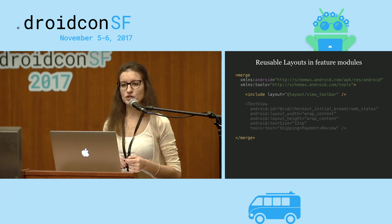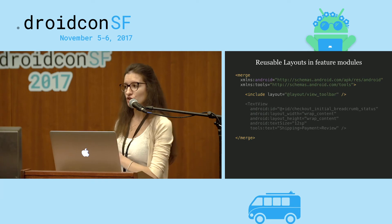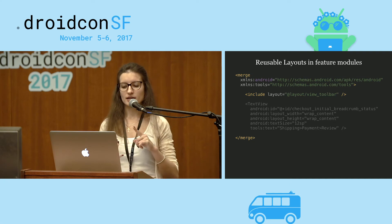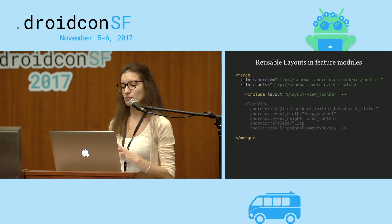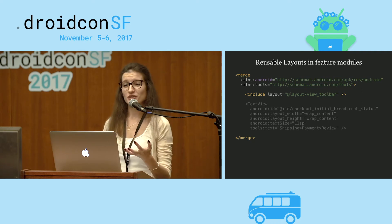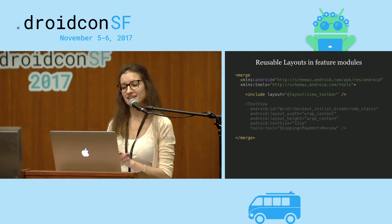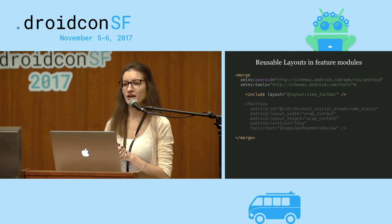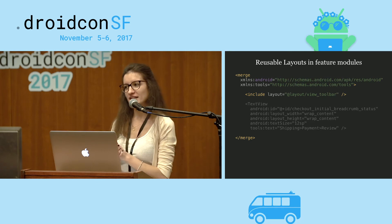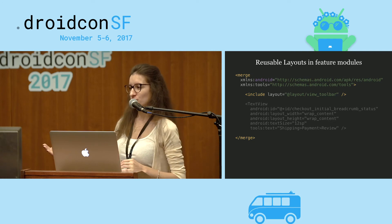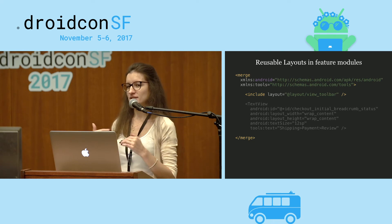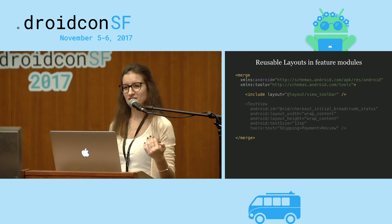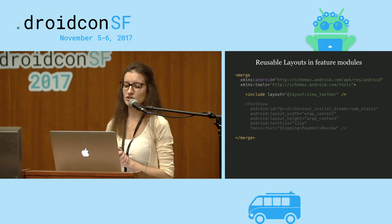Currently, reusable layouts are not supported in feature modules. Tags such as merge and include work fine in the Base Module, but in feature modules there will be resource issues. Unfortunately, I don't have a workaround — we spent a lot of time trying to figure it out, and what we ended up doing was removing reusable layout tags and nesting layouts instead. It's not a pretty solution, but Google is aware of the issue and hopefully will fix it in the next iterations of Instant Apps.